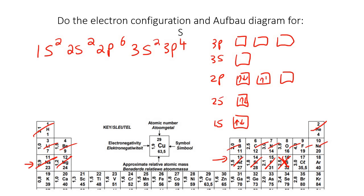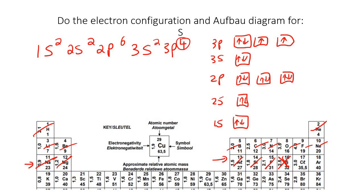It's only when I get to this last 3P that things get a bit weird. Now we've got four electrons. The wrong way would be to put all four of them inside here — you'd rather put 1, 1, 1, and then put the fourth one if there's a fourth one. That's important — they're going to try to catch you out on that one.